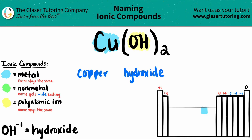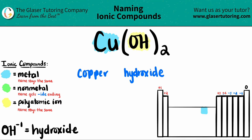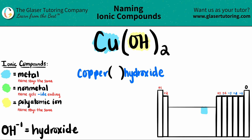But since copper is a transition metal — it's in this D-block here — we have to use a Roman numeral. The Roman numeral is always the charge of the metal. So I need to find out what the charge of copper was. What we're going to do is take the subscripts and crisscross them back up to find the charges.